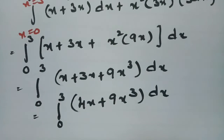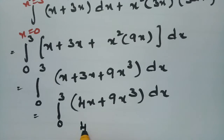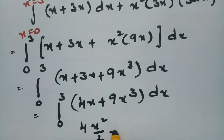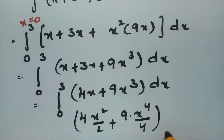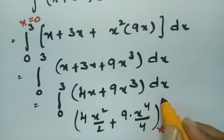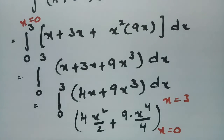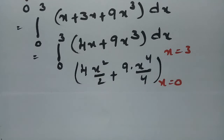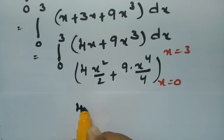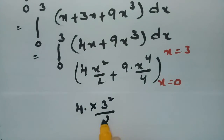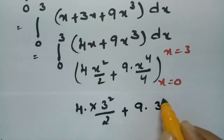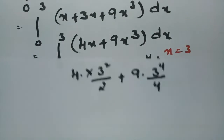Integrating with respect to x: for 4x the integral is 4 × x²/2, and for 9x³ the integral is 9 × x⁴/4, evaluated between the limits x = 0 and x = 3. Substituting the upper limit x = 3: 4 × 3²/2 plus 9 × 3⁴/4.